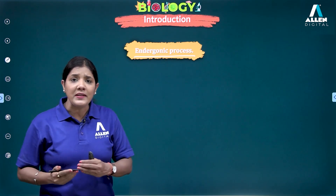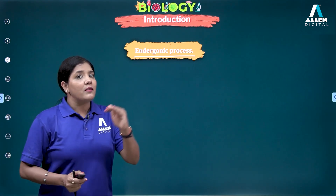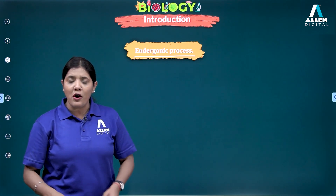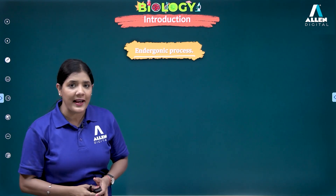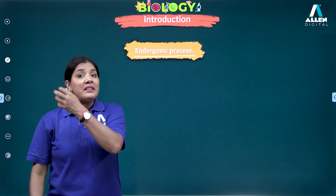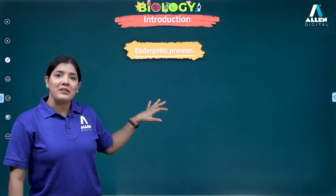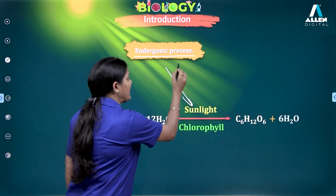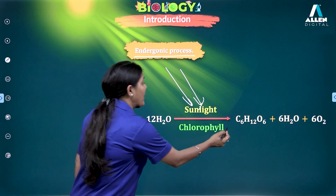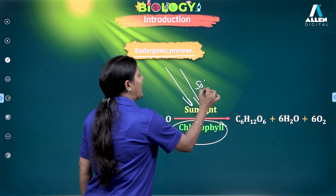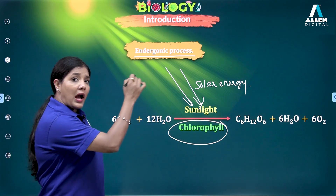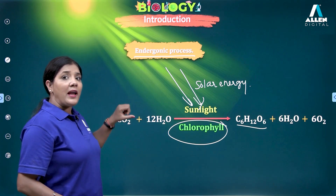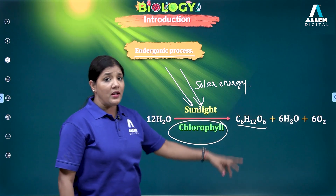Photosynthesis is also called an endergonic process. In any reaction, there can be either entrapment of energy or release of energy. During photosynthesis, solar energy — the physical form — is trapped and converted into chemical form. Since there is utilization of solar energy, photosynthesis is called an endergonic process. The chlorophyll pigment traps sunlight and converts CO2 and water into glucose and oxygen.